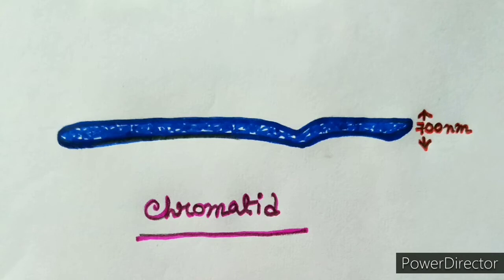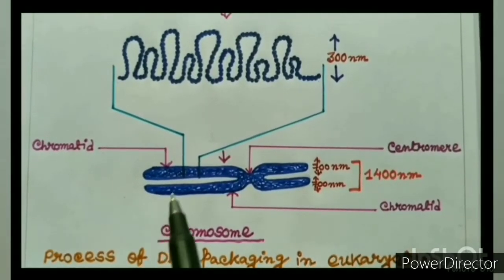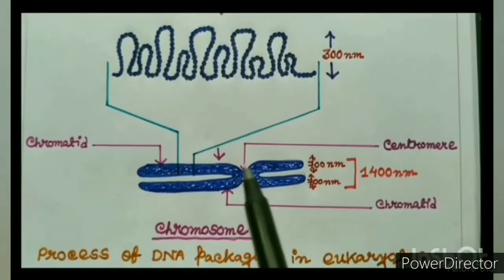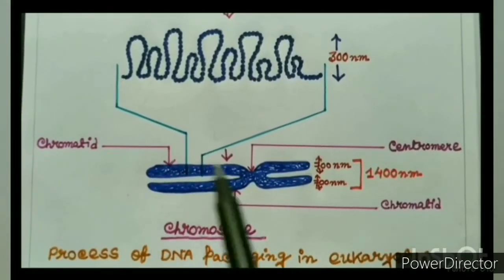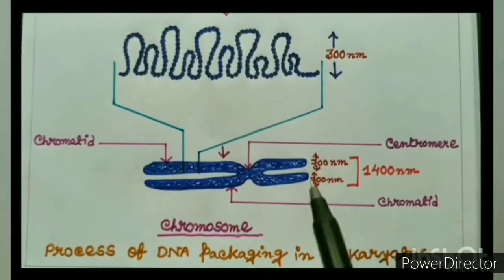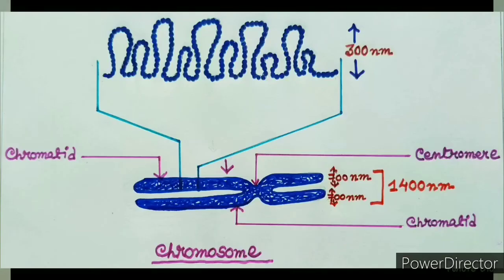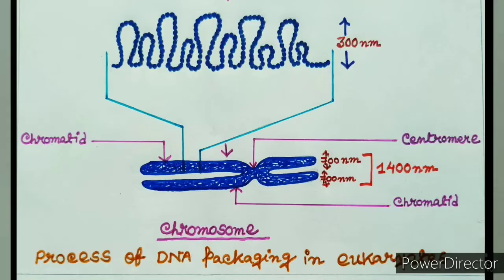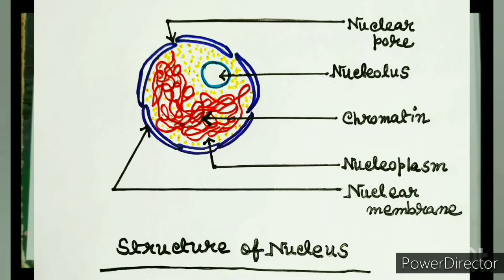Each chromatid consists of DNA and proteins. After DNA replication, a duplicate identical copy of the chromatid is formed, and these two identical chromatids are joined together with the help of a centromere to form a chromosome. The chromosome is made up of two chromatids, giving a diameter of 700 nm + 700 nm = 1400 nanometers. The chromosome is 10,000-fold shorter than a stretched DNA and is the perfect condensed form that can easily fit inside the very small cell nucleus.